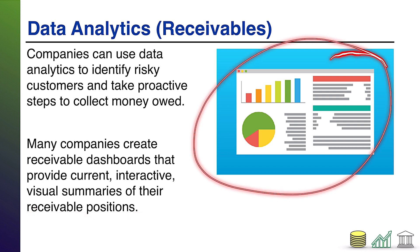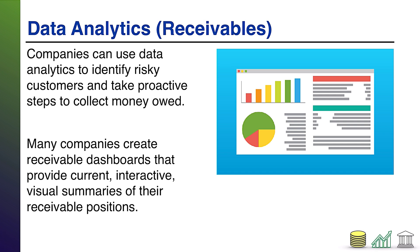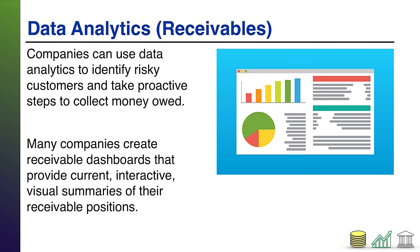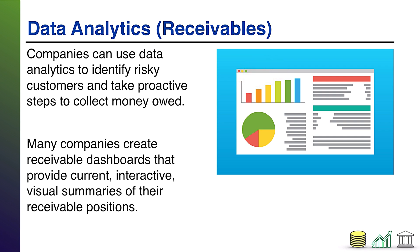One thing you might see is a graph on your dashboard. What this graph may represent is the amount of customers who are not overdue, the amount who are 10 days overdue, 20 days, 30 days, three months, six months, and so on. It's a nice easy way to see whether most of your customers are either not overdue or semi-overdue, and what portion of your customers things are looking pretty bad for — where you may not collect the money.